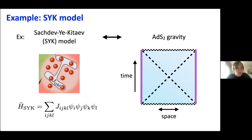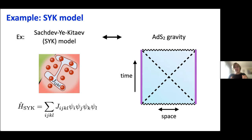The SYK model is defined in terms of what are called Majorana fermions — a particular type of degree of freedom. We imagine a large number of these degrees of freedom, and these fermions interact with each other via some four-body interaction with random coefficients. Importantly, every Majorana fermion interacts with every other fermion, so there's no real sense of spatial locality in the system. We call this a zero-D system — zero plus one dimensional — there's no spatial dimension, only one time dimension.